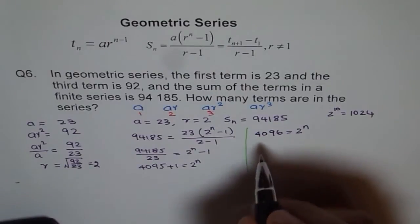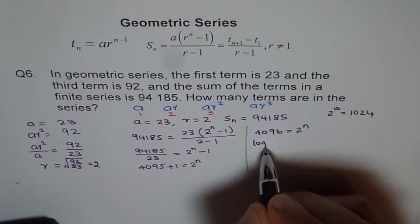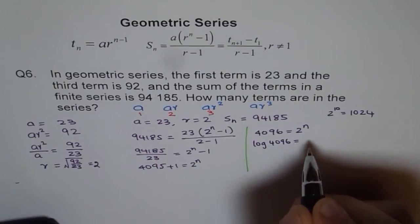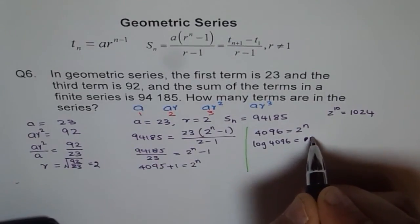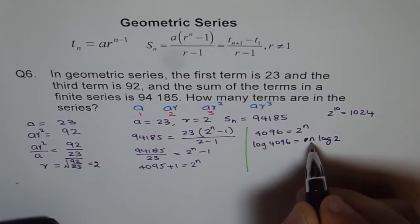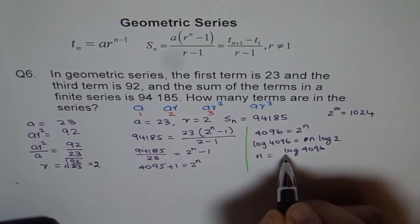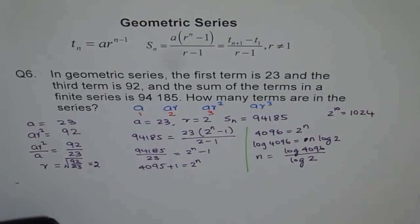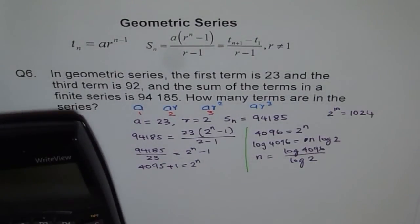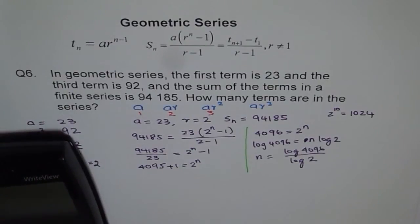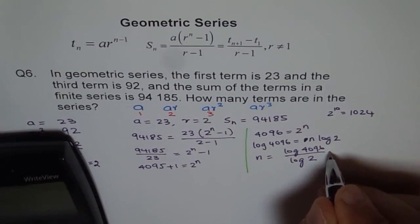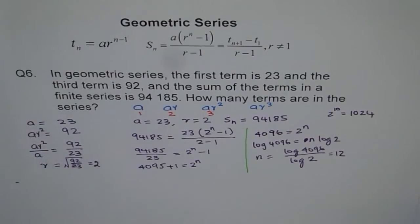The other way to solve this is to take log of both sides. Taking log of both sides gives log(4,096) equals n times log(2), so n equals log(4,096) divided by log(2), which equals 12. So both methods give us n equals 12.